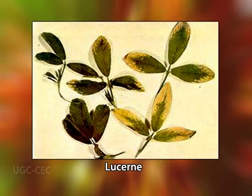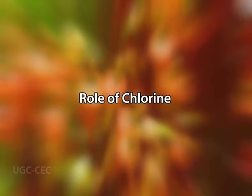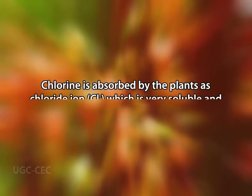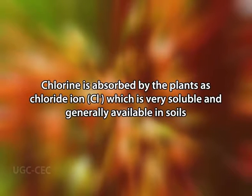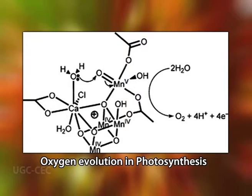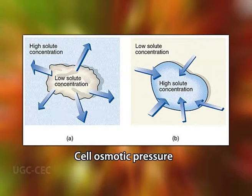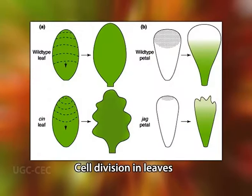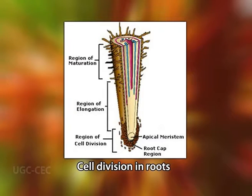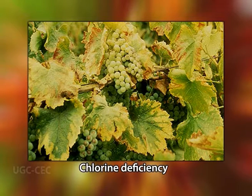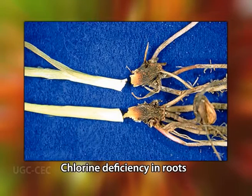Chlorine is absorbed by plants as the chloride ion, which is very soluble and generally available in soils. It is essential in photosynthesis, where it is involved in the evolution of oxygen. It increases cell osmotic pressure and the water content of plant tissues. It is required for cell division in both leaves and roots. Chlorine also reduces the severity of certain fungal diseases, for example take-all disease of wheat. Plants deprived of chloride tend to exhibit reduced growth, wilting of leaf tips, and a general chlorosis. Roots of chlorine-deficient plants appear stunted and thickened near the root tips.